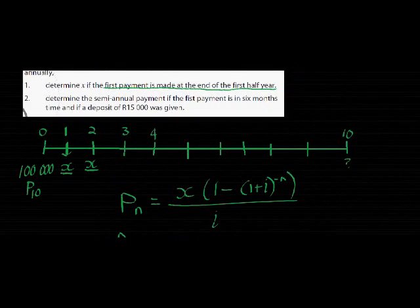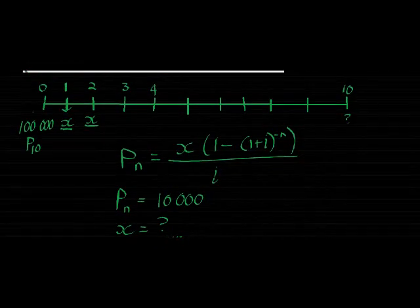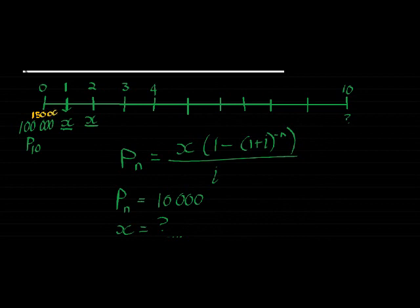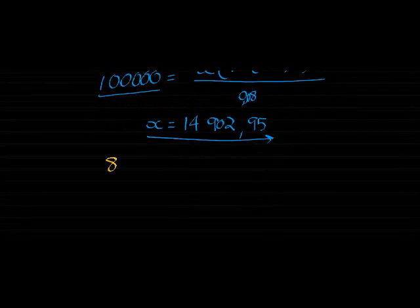Let's answer the second question quickly. Determine the semi-annual payment if the first payment is made in 6 months, but this time a deposit of 15,000 was given. On our timeline, the only thing changing is that initially I've paid 15,000 once off. Which means I don't have 100,000 debt anymore — I only have 85,000 debt. A deposit is an initial payment that reduces your present value. So now I only owe 85,000.